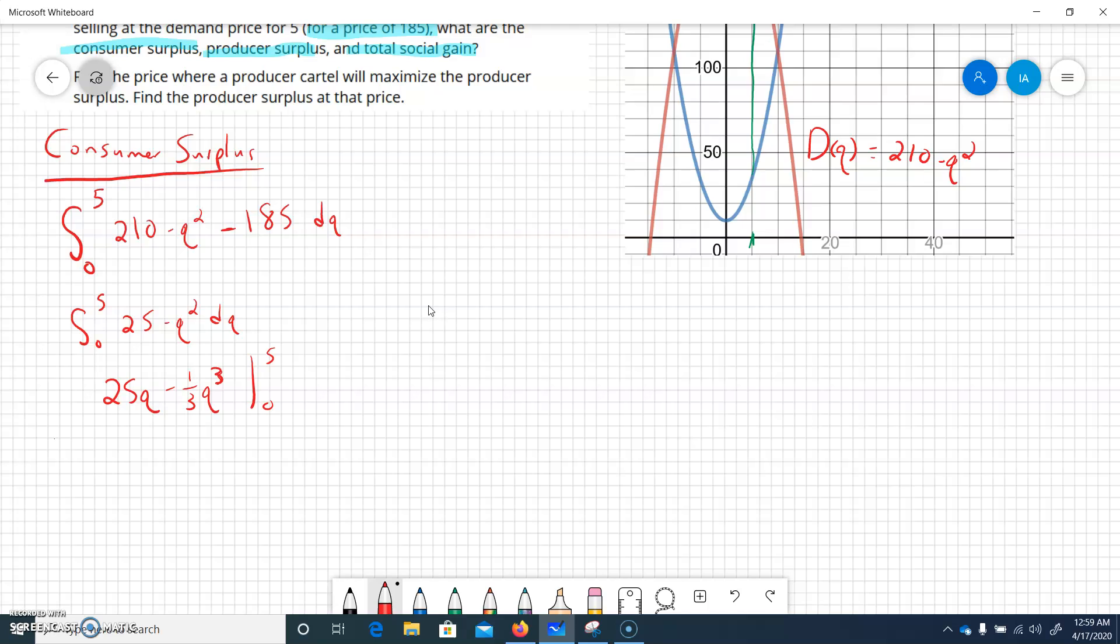Let's move this up. If we integrate this, we get 25q minus 1/3 q cubed from 0 to 5. So we can plug these in, let q equal 5.